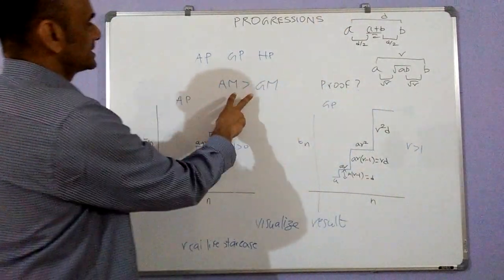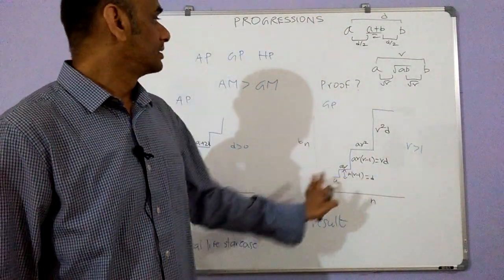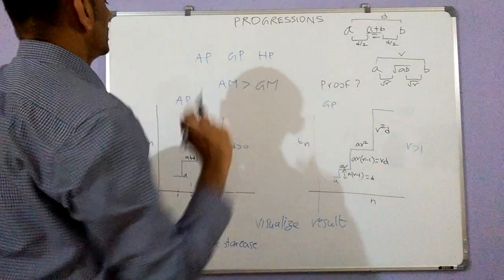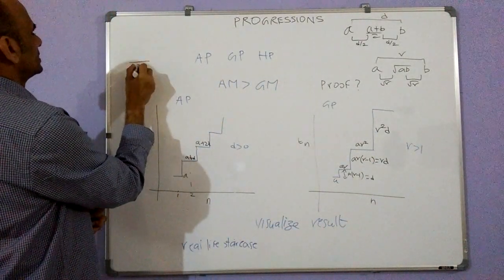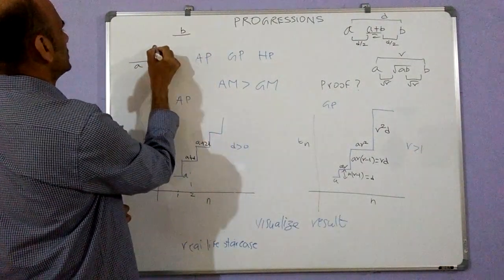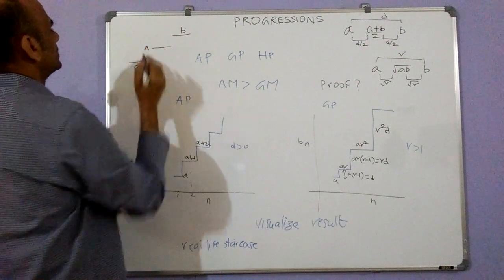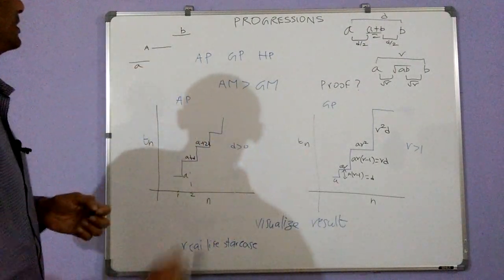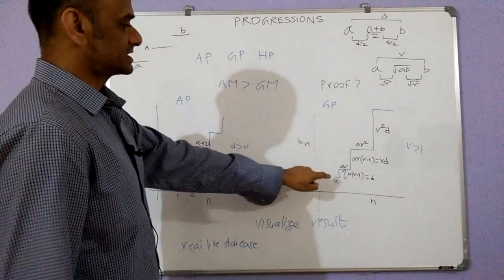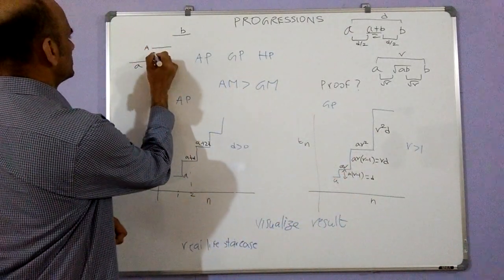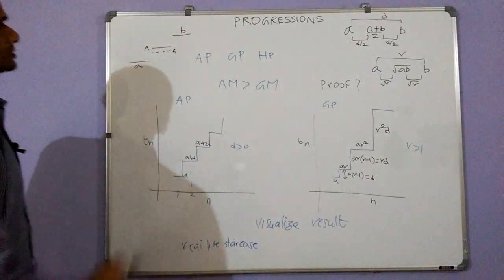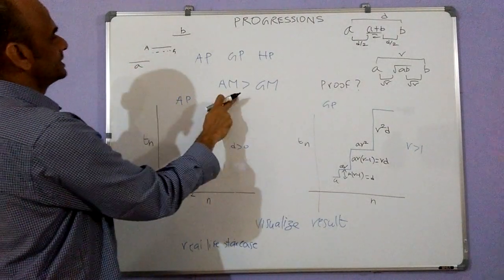Now we can try to understand the AM-GM result using this picture. Since a, the arithmetic mean, and b form an arithmetic progression, the arithmetic mean will be exactly in the middle of a and b. Since a, the geometric mean, and b form a geometric progression with increasing step sizes, the first step is smaller than the second step — meaning the geometric mean falls below the midpoint. From this we can visualize that the arithmetic mean is greater than the geometric mean.